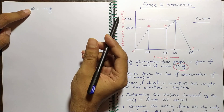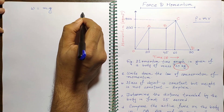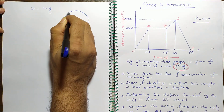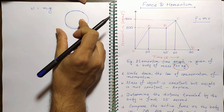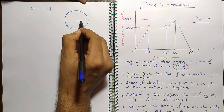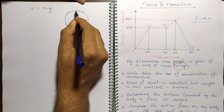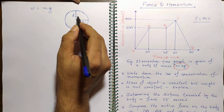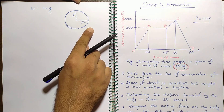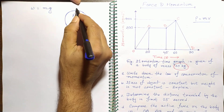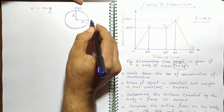Weight varies because the Earth is not perfectly round. The polar regions are a bit compressed, so the radius of the Earth is not constant — slightly bigger at the equator and slightly smaller at the poles. Therefore, the value of g is not the same at all places. At the polar region g is 9.83 m/s², and at the equatorial region it is 9.78 m/s².